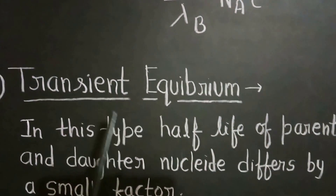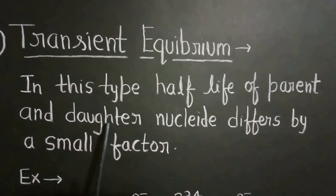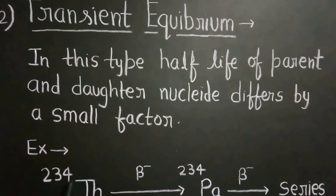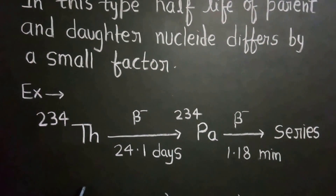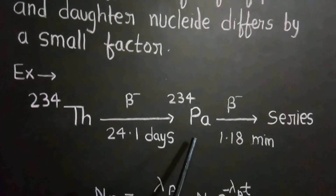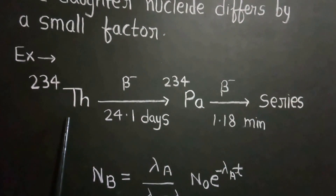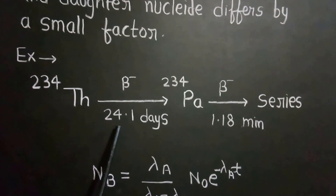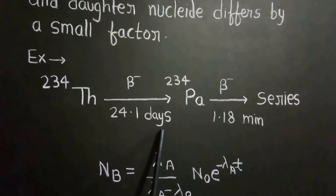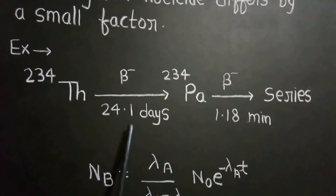The next equilibrium is transient equilibrium. In this type, the half-lives of the parent and daughter nuclides differ by only a very small factor. For example, in the thorium disintegration series, thorium is the parent atom with a half-life of 24.1 days, while palladium is the daughter nuclide with a half-life of 1.18 minutes. Since the difference is not very large, this is called transient equilibrium.